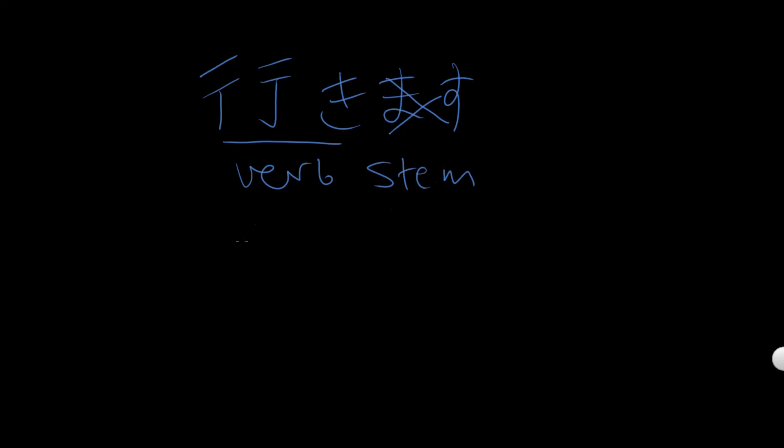So this is the verb stem. So you're going to say want to go. Could be I want to go to Japan. 日本に行きたい. Depending on the context of the register, we would add です. So 日本に行きたいです.